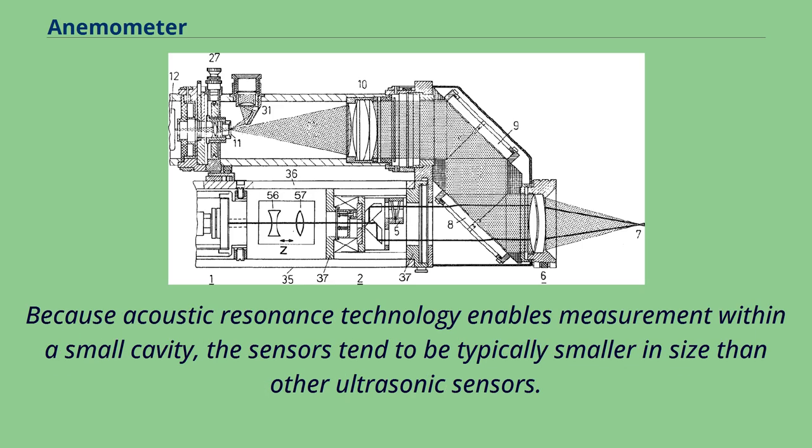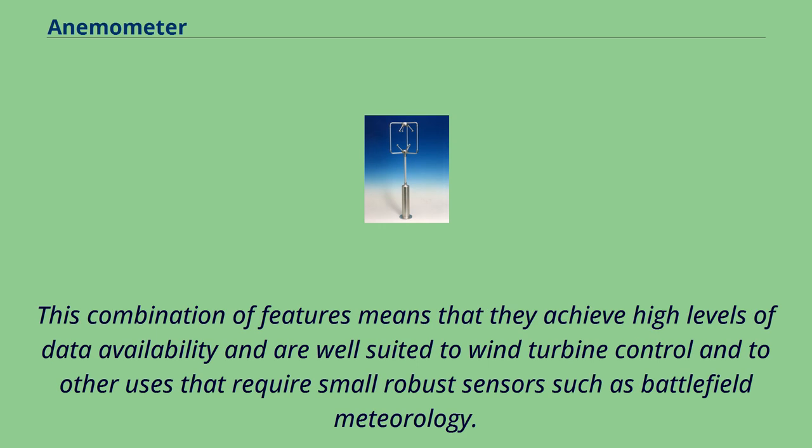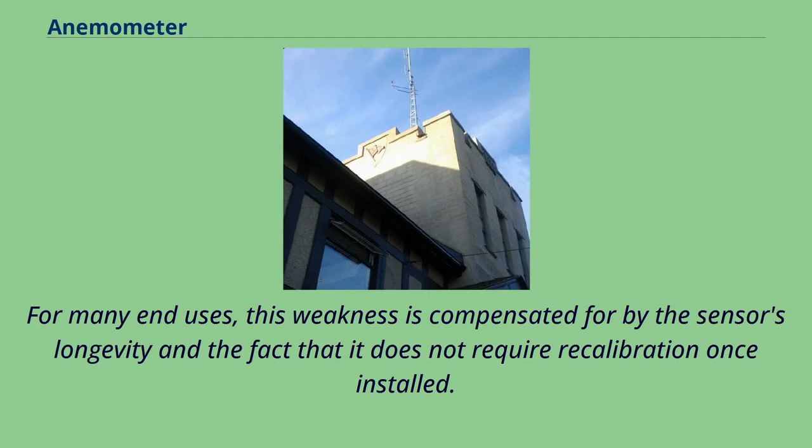Because acoustic resonance technology enables measurement within a small cavity, the sensors tend to be typically smaller in size than other ultrasonic sensors. The small size of acoustic resonance anemometers makes them physically strong and easy to heat, and therefore resistant to icing. This combination of features means that they achieve high levels of data availability and are well suited to wind turbine control and to other uses that require small robust sensors such as battlefield meteorology. One issue with this sensor type is measurement accuracy when compared to a calibrated mechanical sensor. For many end uses, this weakness is compensated for by the sensor's longevity and the fact that it does not require recalibration once installed.